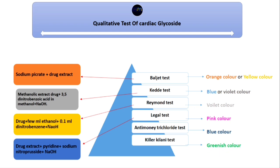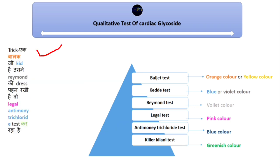In the next slide, we are discussing a memory trick. The Baljet test gives an orange and yellow color.